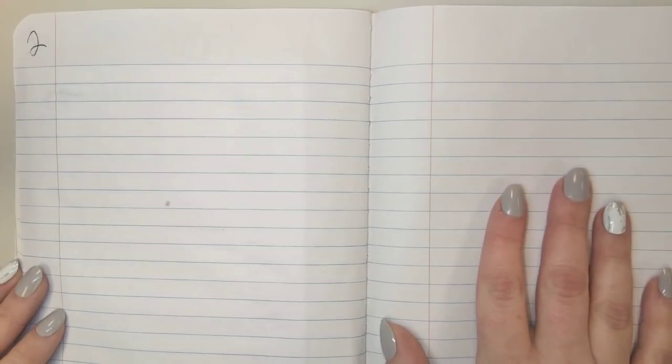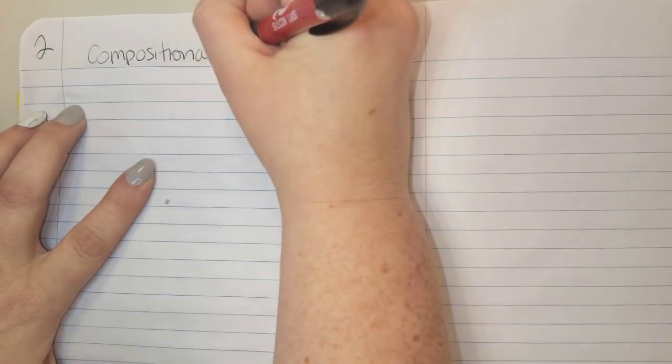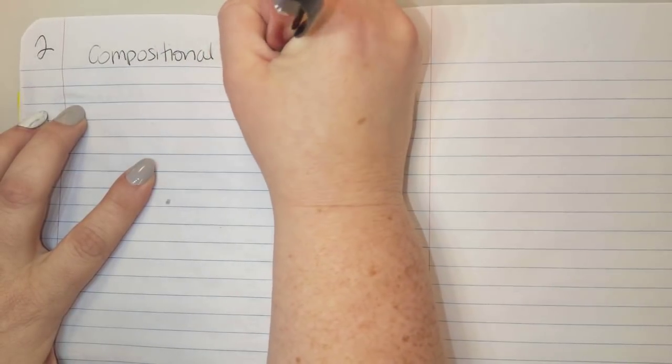Our notes for Pit Stop A are going to be on page 2. Pit Stop B will be on page 3. We're going to set them both up at first, and we'll do the first part in Pit Stop A, the second part in Pit Stop B. The title of page 2 is called Compositional Layers.